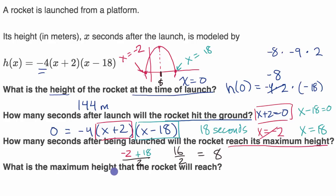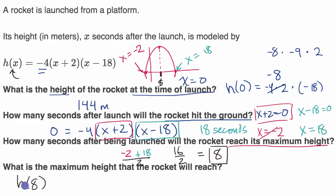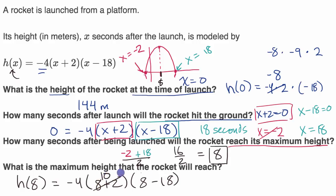What is the maximum height that the rocket will reach? We already know from the previous question that we reach maximum height when x equals eight, eight seconds after launch. So we evaluate h of eight: h of eight equals negative four times eight plus two times eight minus 18. Eight plus two is 10, and eight minus 18 is negative 10. So you have negative four times 10 times negative 10, which is negative four times negative 100, giving positive 400. So the maximum height is 400 meters.